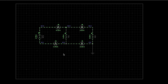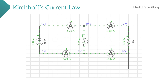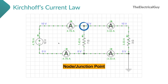Now let's evaluate this circuit further to understand KCL. As you can see this particular point — to this point we have connected multiple elements in the circuit: a 7 ohm resistor, a 3 ohm resistor, and also the supply. The point wherever multiple circuit elements — two or more — are connected, that point is called a node or junction point.